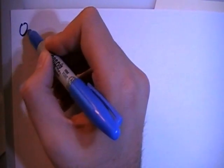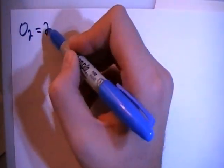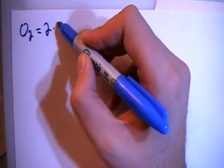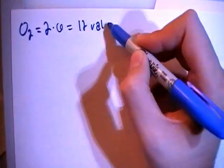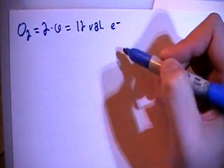Hey guys, in this video I'm going to show you how to draw the Lewis dot structure for oxygen O2. So here we go. O2 is going to give us two oxygens, each with six valence electrons for a total of 12 valence electrons.